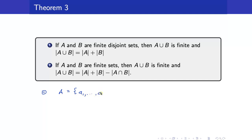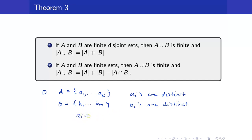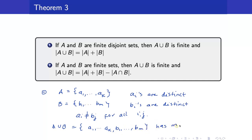For part 1, since A and B are finite disjoint sets, we can write A as A sub 1 up to A sub k, and B as B sub 1 up to B sub m. All the A's are distinct because A has k elements, similarly all B's are distinct, and moreover all A sub i's are different from the B sub j's — A sub i is not equal to B sub j for all i and j. So A union B is just their combination: A1 up to A sub k, then B1 up to B sub m, and this set has m plus k elements.